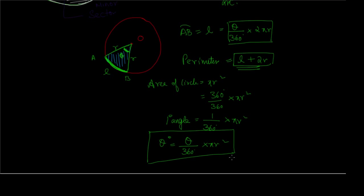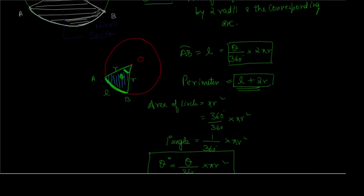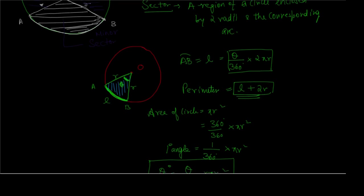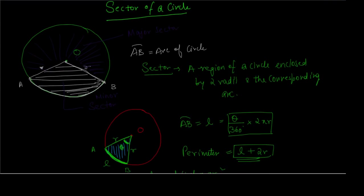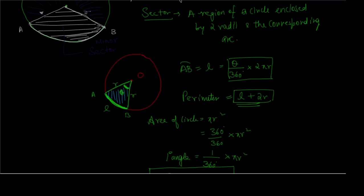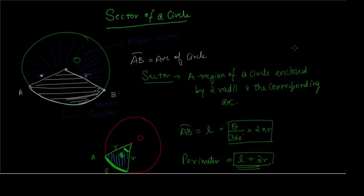These are the standard formulae for a sector. We have defined a sector, explained its types, and derived the formulas for arc length, perimeter, and area. Using these direct formulas, you can solve any question in your NCERT or any other book. If you have any doubts, please post them in the comment section below. Thank you very much for joining. Stay healthy, stay smart, and keep studying.